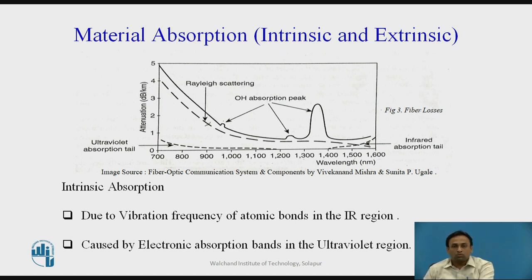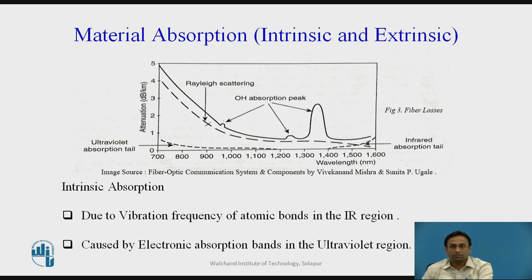Imperfections in the atomic structure of the fiber material induce absorption through the presence of missing molecules or oxygen defects. Absorption is also induced by the diffusion of hydrogen molecules into the glass fiber. Since intrinsic and extrinsic material properties are the main causes of absorption, we will now discuss them in detail.